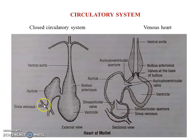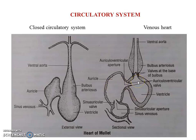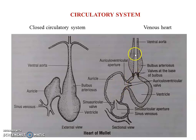Blood is received from various parts of the body by the sinus venosus. It flows from the sinus venosus through the sinoauricular aperture to the auricle, and once it reaches the auricle the sinoauricular valve closes so blood cannot move back. From the auricle it moves through the auriculoventricular aperture into the ventricle, and that valve closes. When the ventricle fills up, the blood pushes the valve open toward the bulbus arteriosus, and contraction of the ventricle pushes blood to the bulbus arteriosus and then to the ventral aorta.